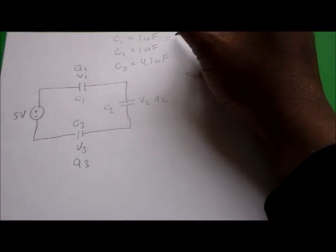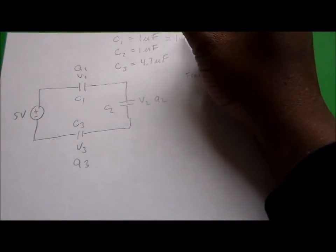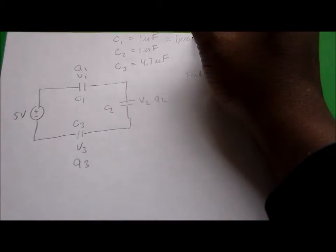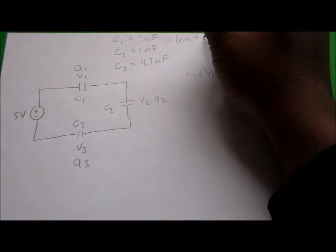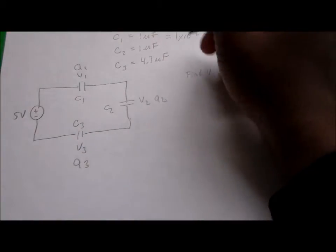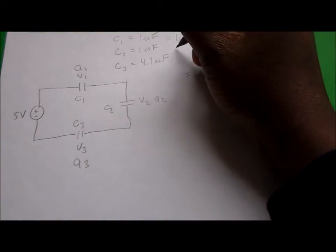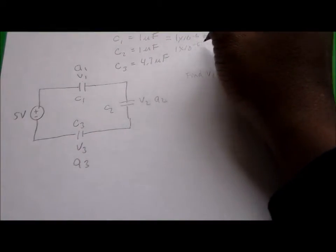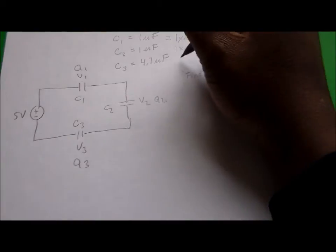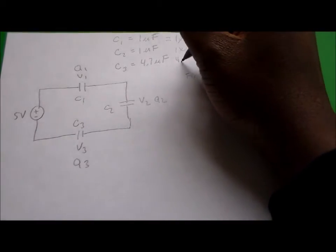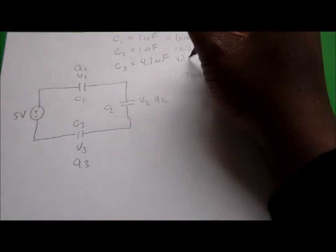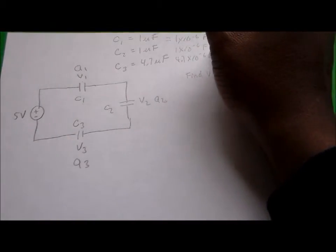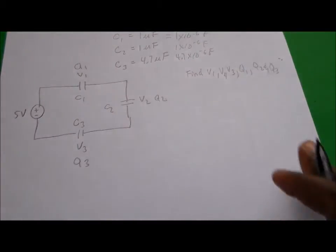These are the same as one times ten to the minus six farads, one times ten to the minus six farads, and 4.7 times ten to the minus six farads.